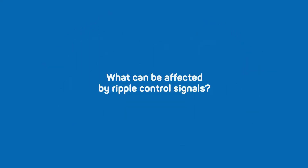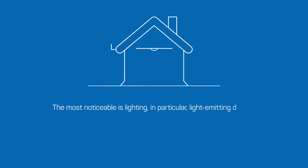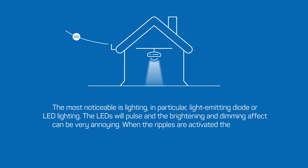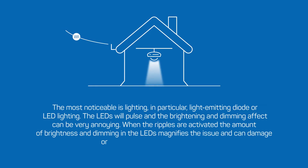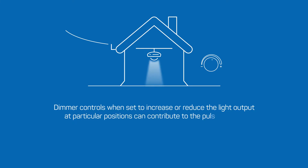The most noticeable devices affected by ripple control signals are lighting, in particular light emitting diode or LED lighting. The LEDs will pulse and the brightening and dimming effect can be very annoying. When the ripples are activated, the amount of brightness and dimming in the LEDs magnifies the issue and can damage or reduce the LED life expectancy. Dimmer controls, when set to increase or reduce the light output at particular positions, can contribute to the pulsing effect of the LEDs they are controlling.